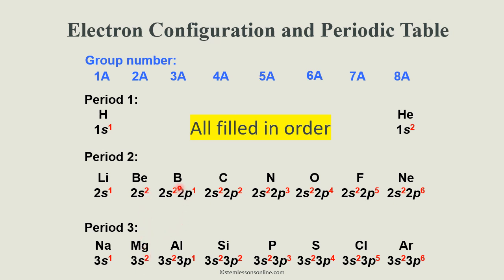In the 3A or 13th group, the last shell is the same — it's the second principal energy level for period 2, and the third principal energy level for period 3. You can see S2 P1 remains the same, meaning the valence electron count will be 3. That remains the same for the 13th group. A similar trend can be seen in the 14th, 15th, 16th, 17th, and 18th groups.